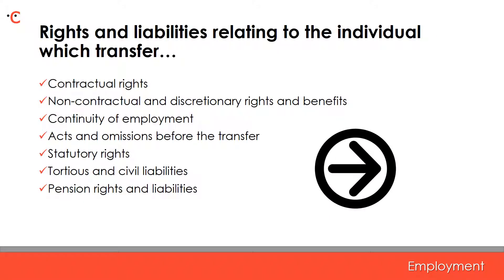Any act or omission of the transferor pre-transfer which relates to the transferring employee or their employment will be deemed to have been an act or omission of the transferee. Subject to a few exceptions, the transferee effectively steps into the shoes of the transferor as the employer of the transferring employees. So, what rights and liabilities relating to the individual transfer under TUPE? First up is contractual rights. Contractual terms can be either expressed, implied, incorporated or statutory, and these contractual terms all transfer under TUPE.